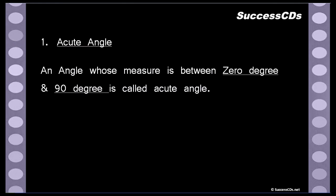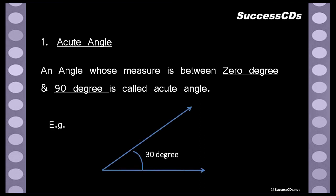First of all, we have acute angle — the smallest form of angle. An angle whose measure is between 0 degrees and 90 degrees is called an acute angle. For example, here we see two arms at an angle of less than 90 degrees — it's only 30 degrees. Therefore, such an angle of 30 degree measure is called an acute angle.